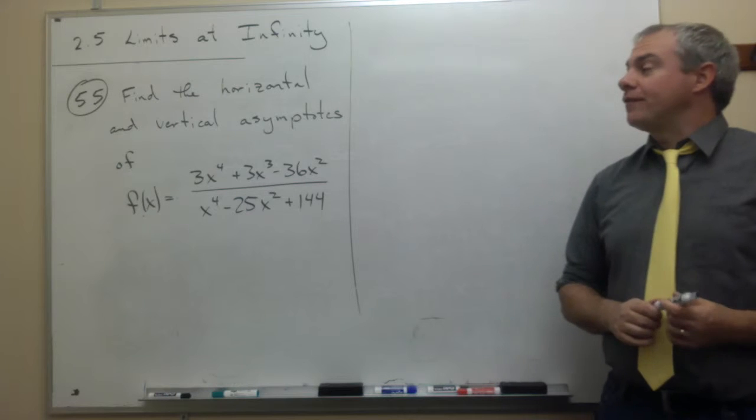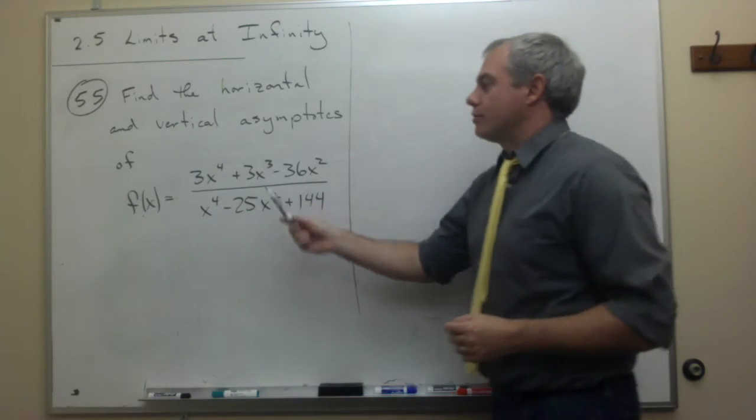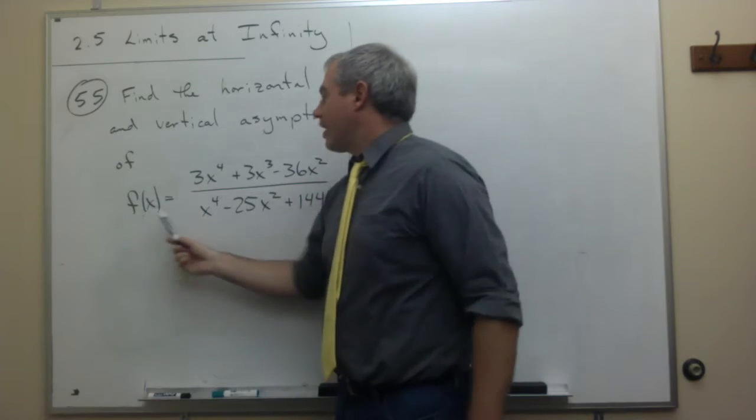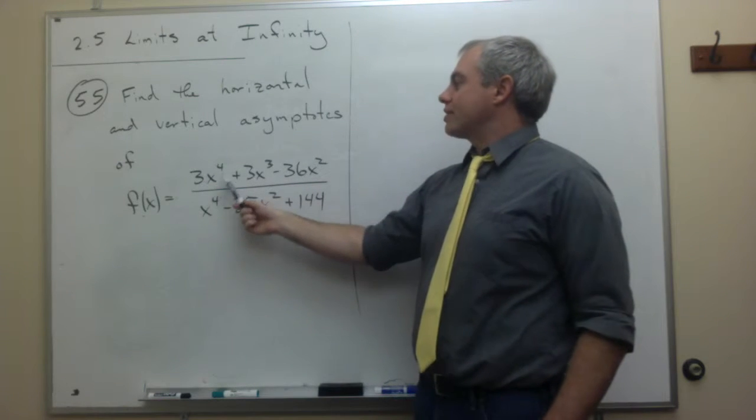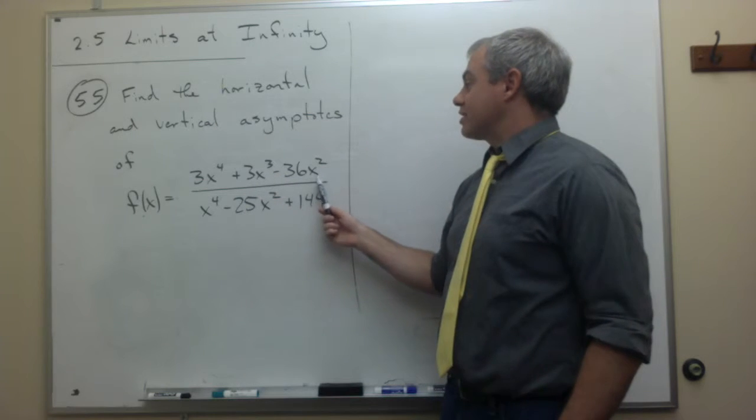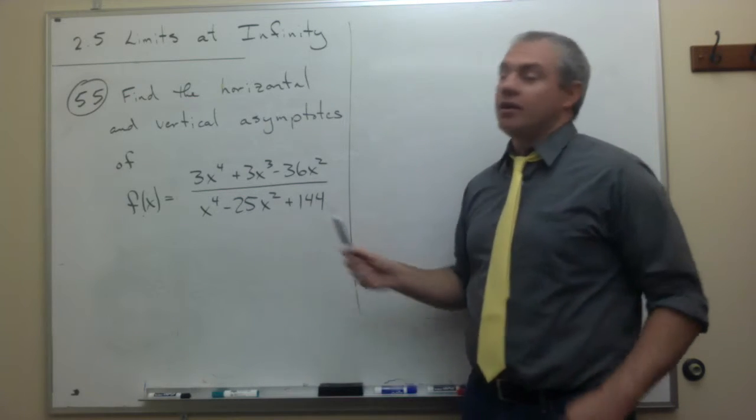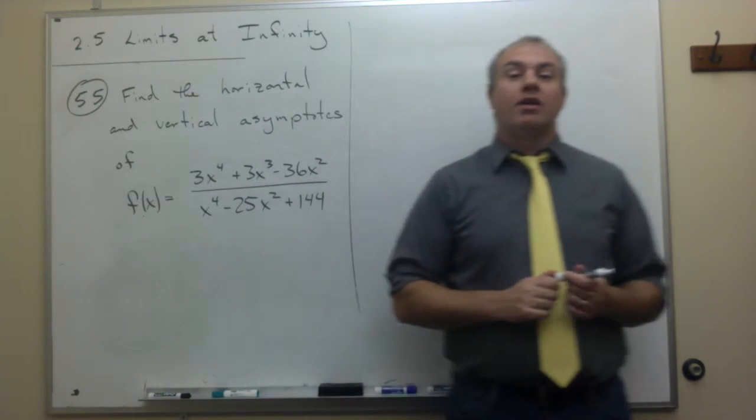In problem number 55, we're asked to find the horizontal and vertical asymptotes of the following function: f(x) equals 3x to the fourth plus 3x cubed minus 36x squared, divided by x to the fourth minus 25x squared plus 144.